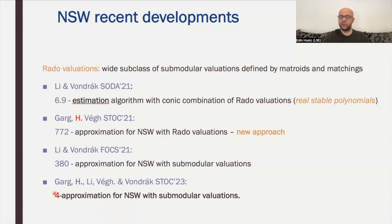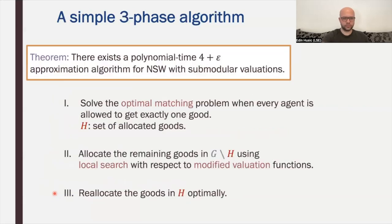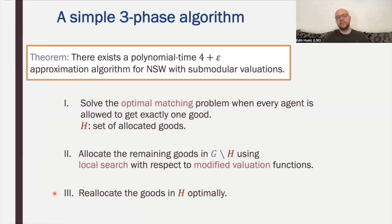Now, joining forces, we give a 4-approximation algorithm for Nash social welfare under submodular valuations — more formally, a 4+ε approximation. This turns out to be a surprisingly simple algorithm, and the rest of the talk I will devote to explaining the algorithm and a little bit of the analysis.